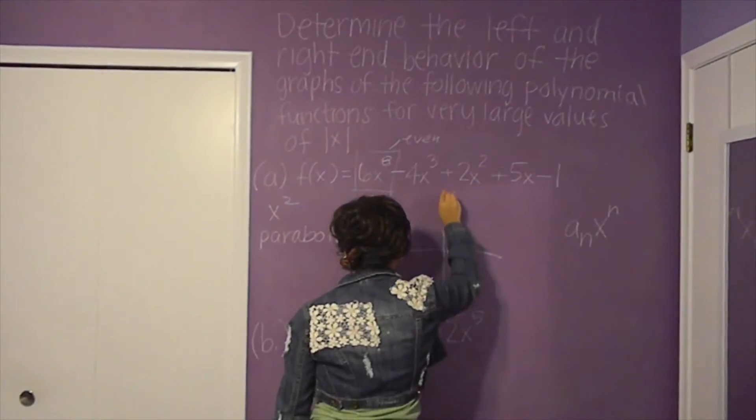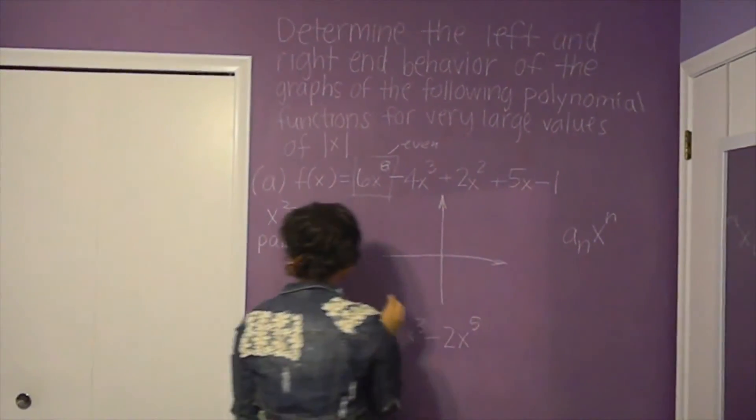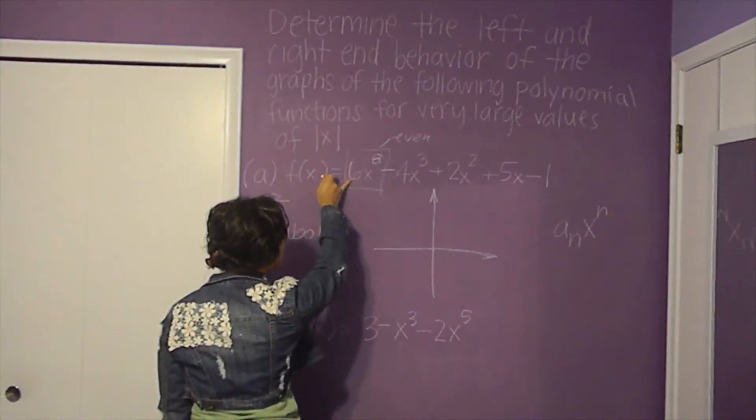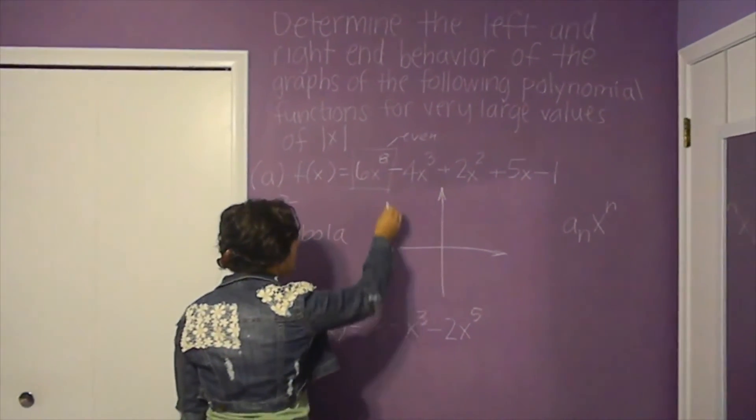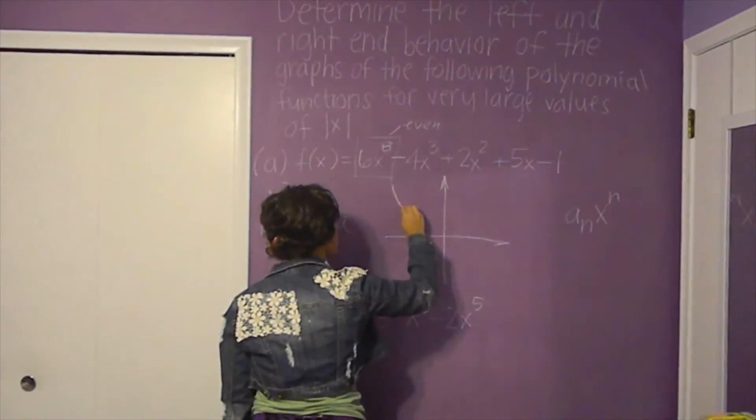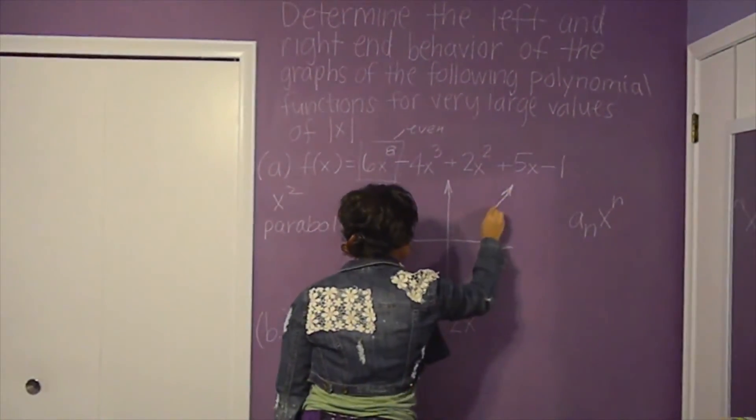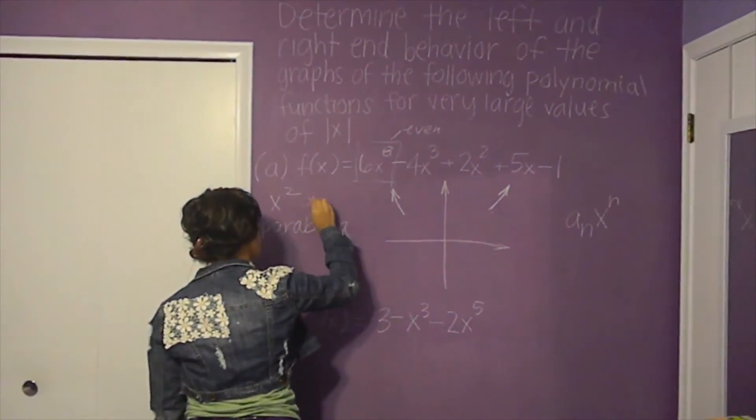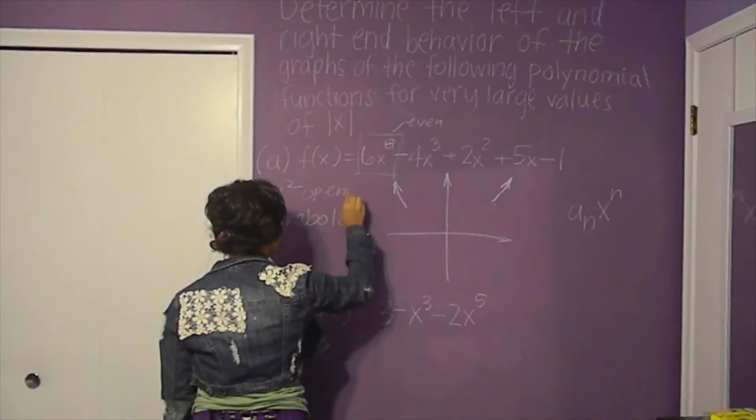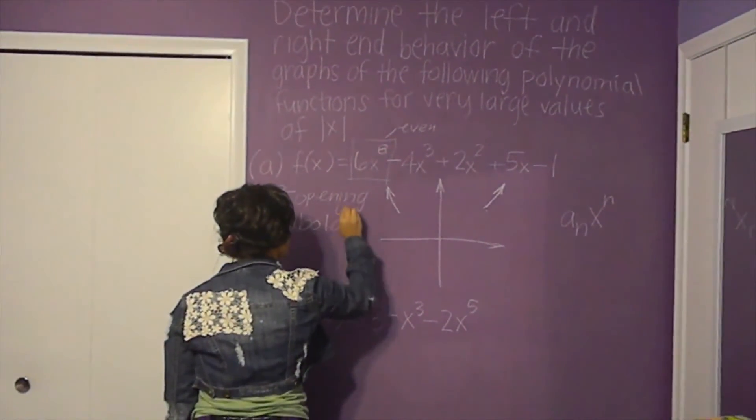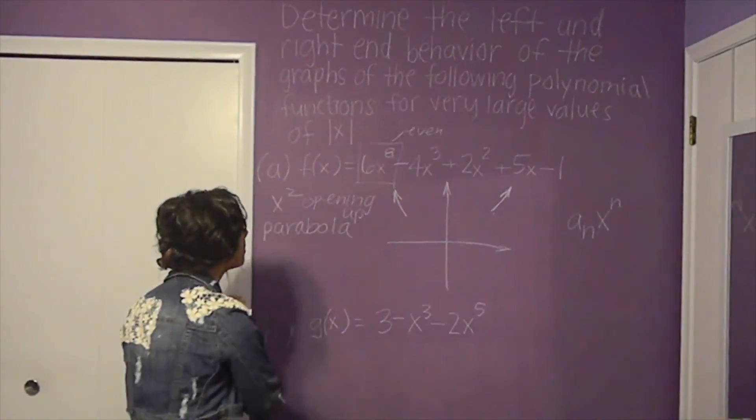On a graph, since the 6 is positive and you have an even power, it's going to open up. So the end behavior will look like an upward-opening parabola for that one.